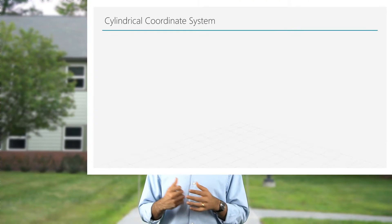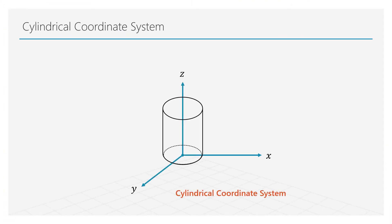Depending on the nature and geometry of the problem being solved, we use other coordinate systems such as cylindrical or spherical. The primary reason for choosing a certain coordinate system is to describe the geometry. The need for these coordinates stemmed from the fact that spherical and cylindrical bodies are difficult to describe using the regular Cartesian system. We define the cylindrical system of coordinates in terms of r, phi, and z. Here r is in the radial direction of the cylinder, phi represents the angle along the circular cross section, and z refers to its height.